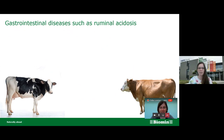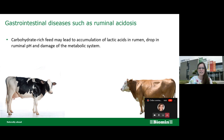One of our focus areas is gastrointestinal diseases such as ruminal acidosis. Ruminal acidosis is a bovine metabolic disease that affects feedlot and dairy cattle. It is generally associated with the ingestion of large amounts of highly fermentable carbohydrate-rich diets, which result in the excessive production and accumulation of short-chain fatty acids, especially lactic acid in the rumen, causing a drop in ruminal pH and potential damage to the metabolic system.